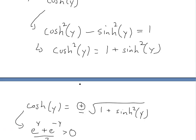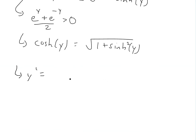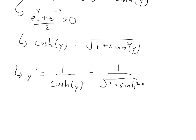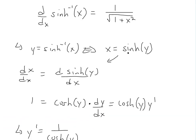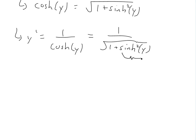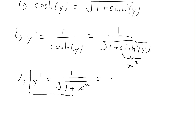Substituting back, y prime equals 1 over hyperbolic cosine of y, which equals 1 over the square root of 1 plus hyperbolic sine squared of y. Since from our inverse function definition x equals hyperbolic sine of y, hyperbolic sine of y squared is just x squared. Therefore y prime equals 1 divided by the square root of 1 plus x squared. This proves that d/dx of inverse hyperbolic sine of x equals 1 over the square root of 1 plus x squared.